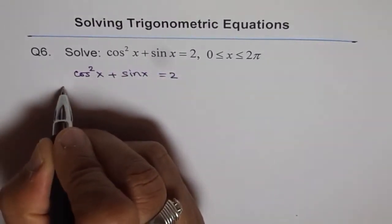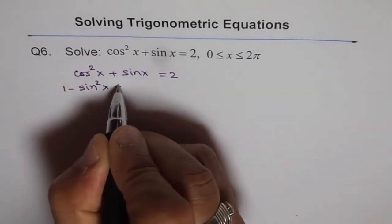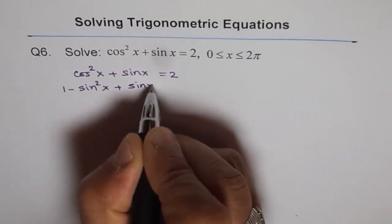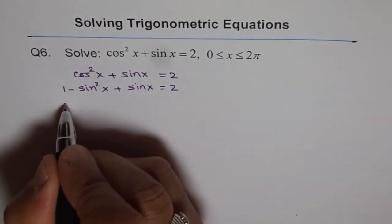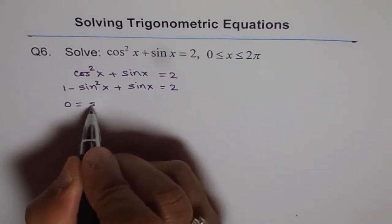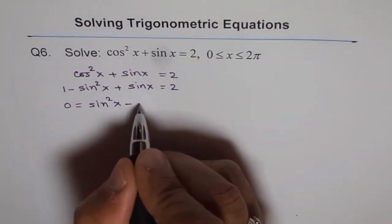Cos squared x can be written as 1 minus sin squared x plus sin x equals 2. Now let us take each and every term on this side and write our equation as 0 equals sin squared x. I am just rearranging all these things, minus sin x.